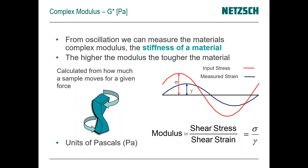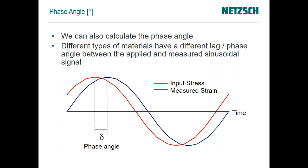From this we get two major measurements: stress and strain. Stress over strain gives us modulus — specifically the shear modulus of the material. If you're used to doing measurements on solid samples, you're used to looking at Hookean behavior and Young's modulus. Shear modulus is similar to Young's modulus — it's a factor of three different.